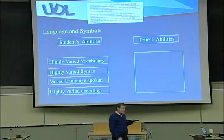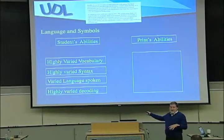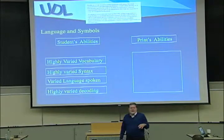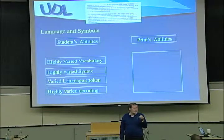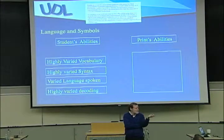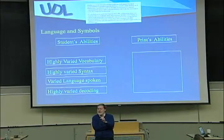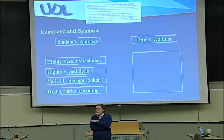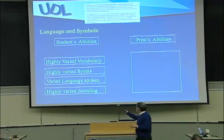Now I want to shift to language and symbols — the second of the three things. Kids are going to vary in their vocabulary. The Todd and Risley studies show the gigantic vocabulary difference: some kids come in with 80,000-word vocabularies and some come in with the equivalent of about 700 words. Just incredible differences. And I know that happens in Canada as well. So kids come in with very different vocabularies.